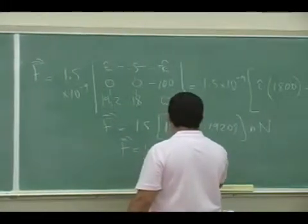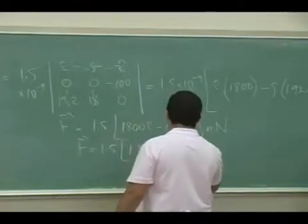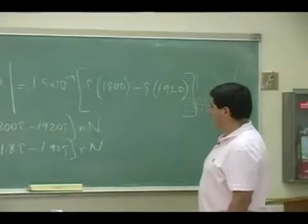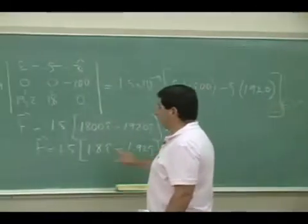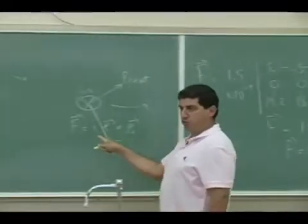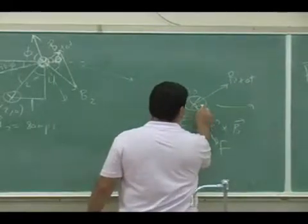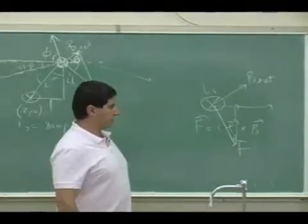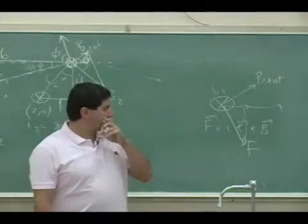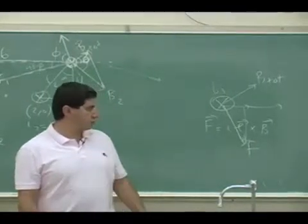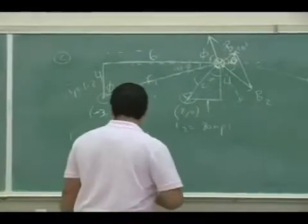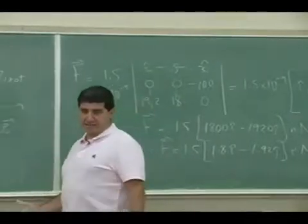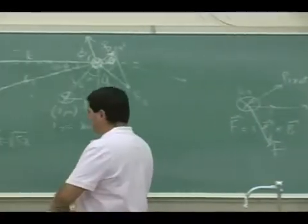Or written more cleanly, F equals 1.8 I hat minus 1.92 J hat micronewtons. And it should match your right-hand rule — it has a positive I component and a negative J component. So it was easier to do the force once we had the magnetic field. The magnetic field was the tougher one.